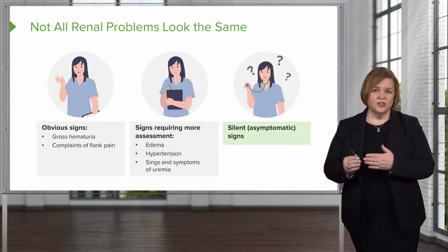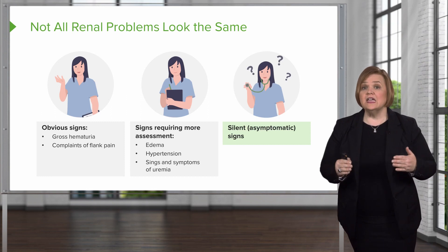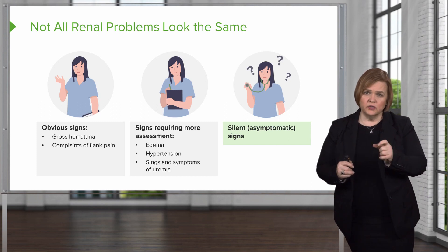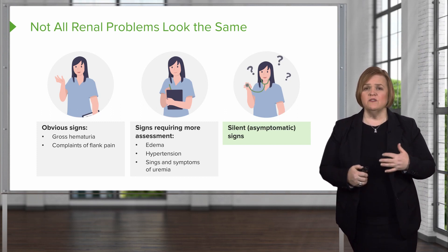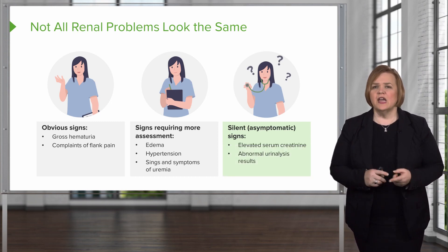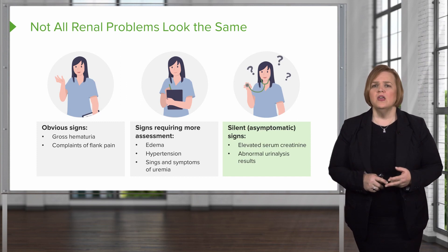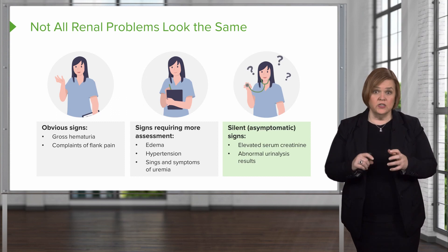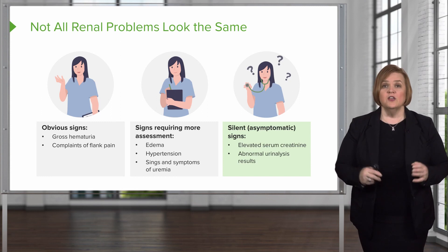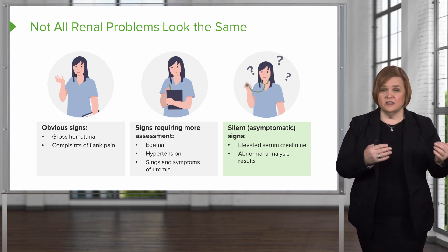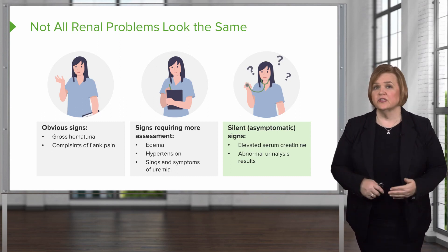The third category are silent ones — asymptomatic, meaning without symptoms. These are things where the patient may not even know they have a problem. We look at lab work: they might have an elevated serum creatinine concentration, or abnormal findings on their urinalysis, where we take urine and do close observation, maybe even under a microscope. Some things are obvious, some are hidden, and some will need further assessment.